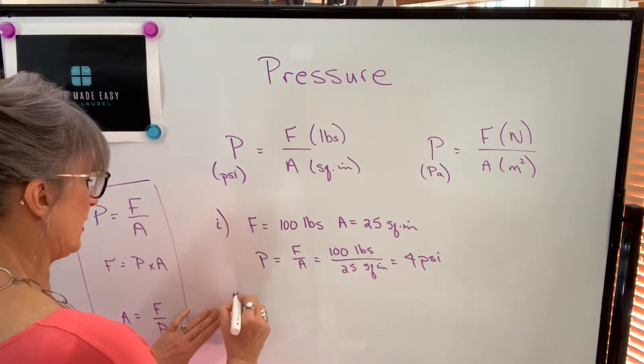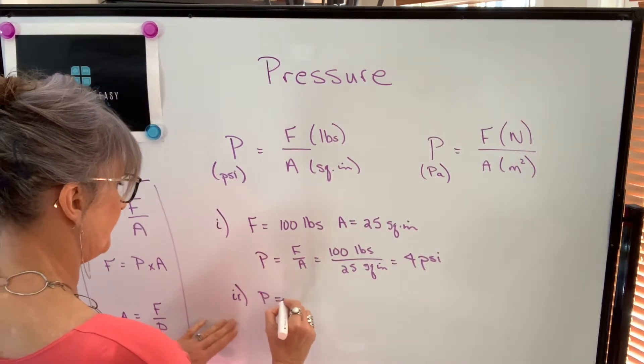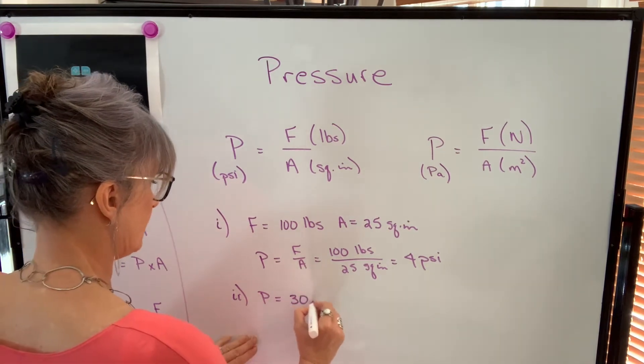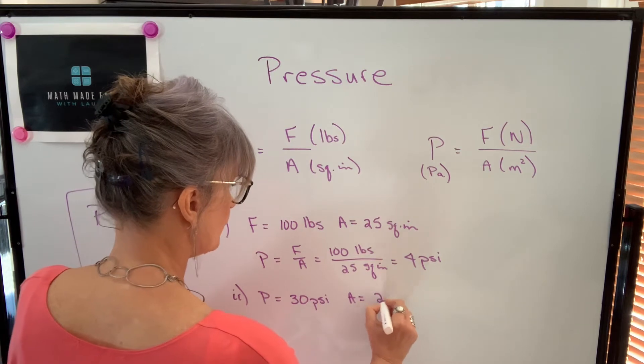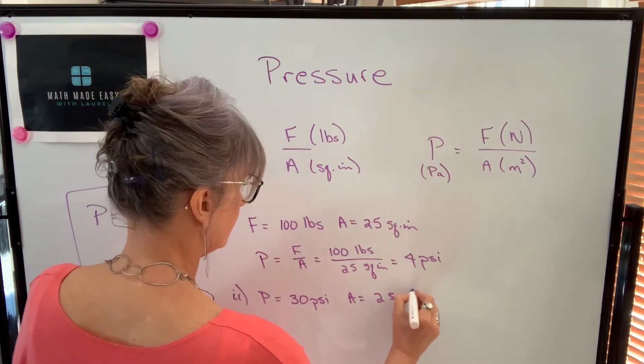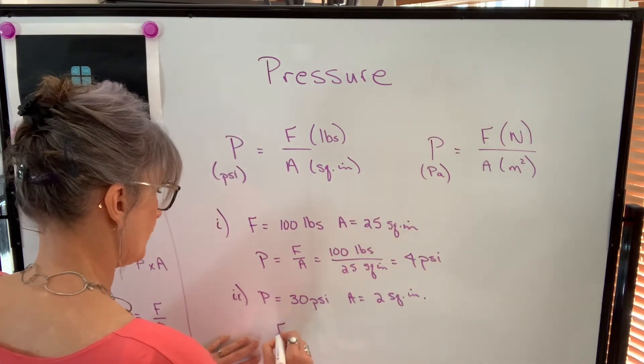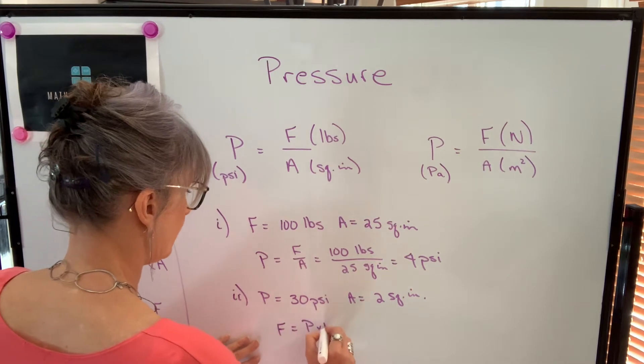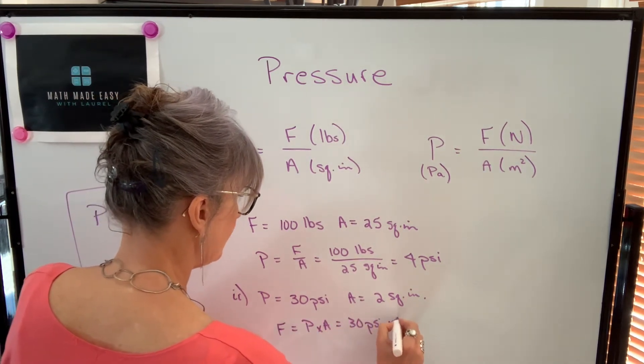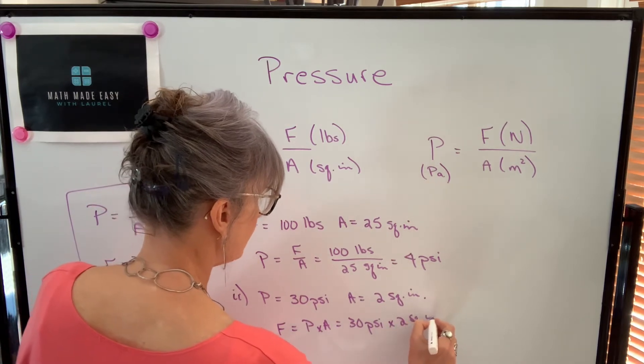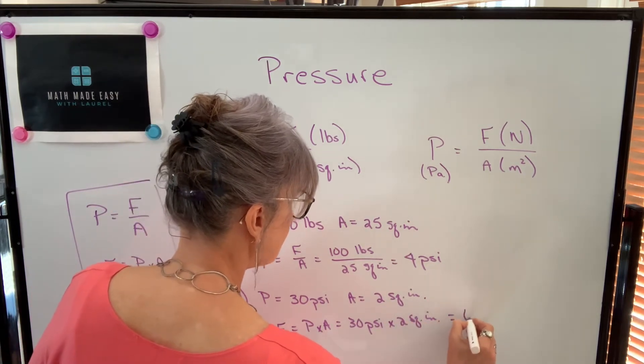And if I had an example where I knew the pressure—30 psi—over an area of 2 square inches, then force will equal pressure times area. So 30 pounds per square inch times 2 square inches gives me 60 pounds.